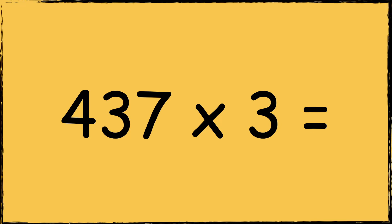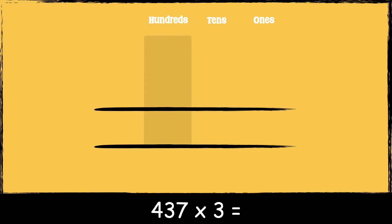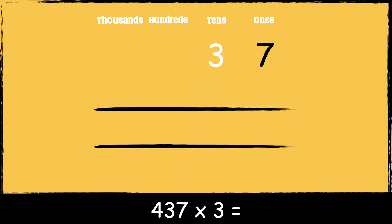Here's the first calculation: four hundred and thirty-seven times three. It's crucial to align the numbers accurately when using written methods for the four operations. We have the ones in the ones column, the tens in the tens column, the hundreds in the hundreds column, and the thousands in the thousands column. The number 437 has seven ones, three tens, and four hundreds. The number three has three ones.